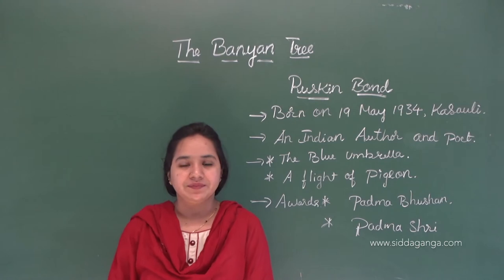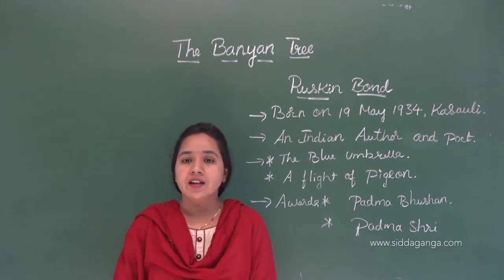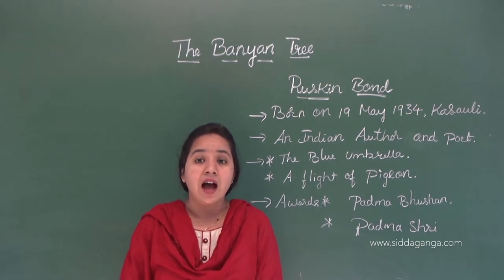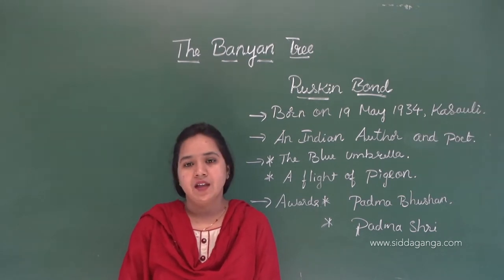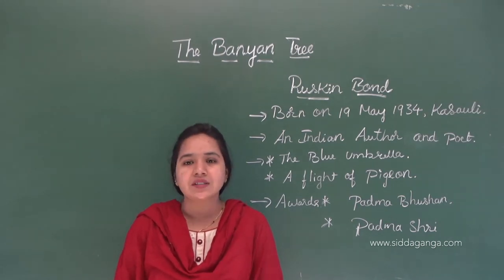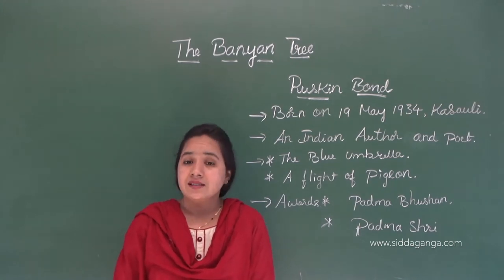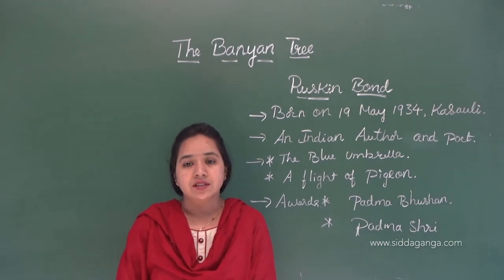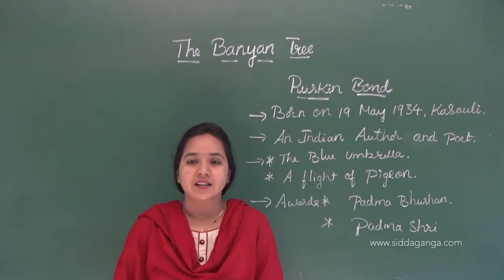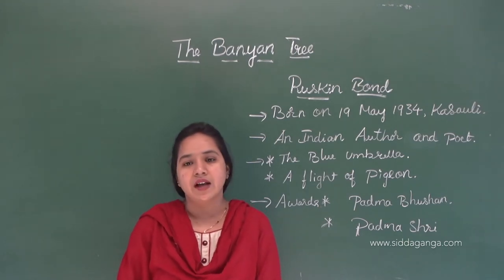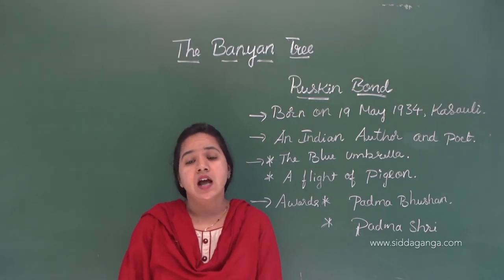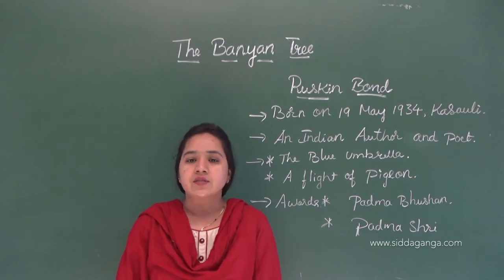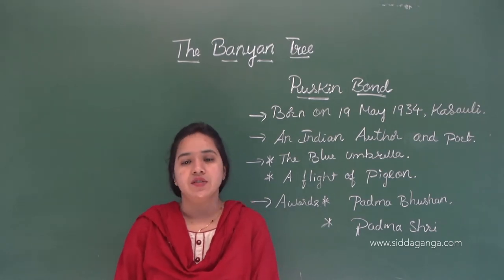So what is this banyan tree? In Kannada we may call it as aaladamara. That's called a banyan tree. But this lesson is not about the tree — this lesson is about the animals. The story was written by Ruskin Bond. He was a famous author and also a poet of India. So let's talk about the author's introduction.